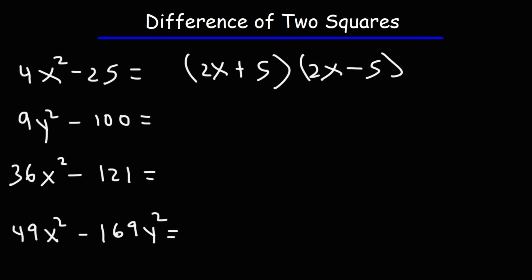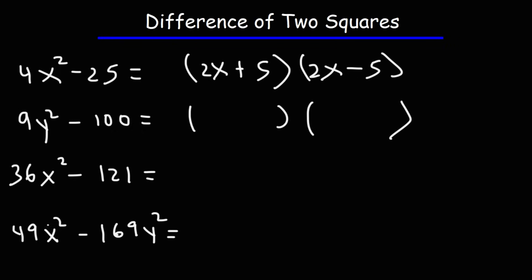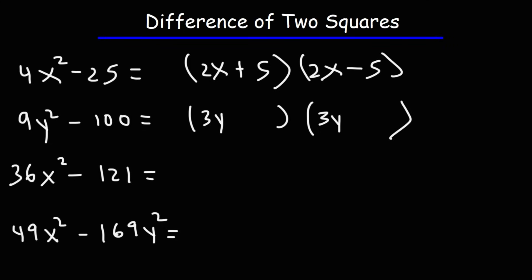Now let's move on to the next example: 9y squared minus 100. What is the square root of 9y squared? The square root of 9 is 3 and the square root of y squared is y, so the square root of 9y squared is 3y. The square root of 100 is 10 — 10 times 10 is 100. So our answer is going to be 3y plus 10 times 3y minus 10.